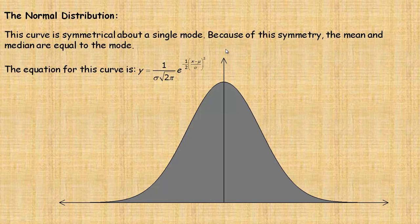So this is what the normal distribution curve looks like. It's symmetrical about a single mode, and because of the symmetry, the mean, median, and mode are actually all the central value here.